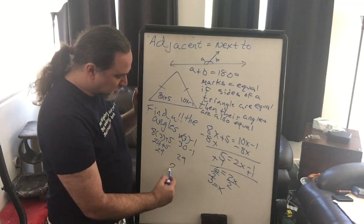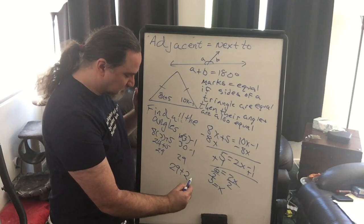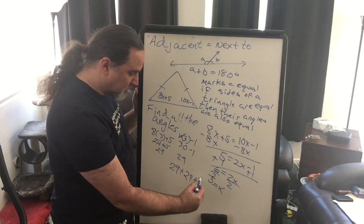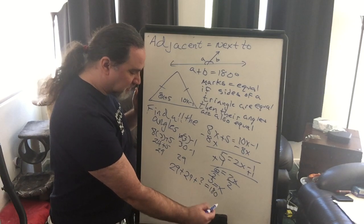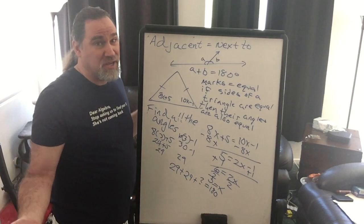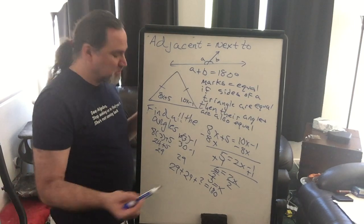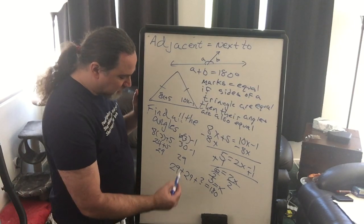So we can find this last angle at the top because the 29 degree angle plus another 29 degree angle plus an unknown angle has to equal 180 degrees, because it's a triangle and all triangles have to be 180 degrees.